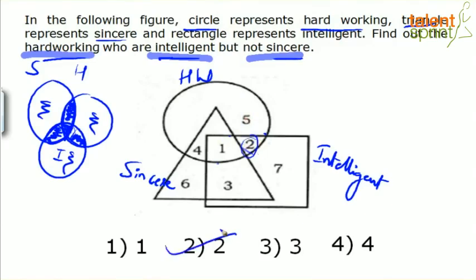So our answer for this question is 2. Region 2 is a part of the circle, a part of the rectangle, but not a part of the triangle. It is common to both circle and rectangle but not common to the triangle. So anything between circle and rectangle but not triangle is 2. The answer is option 2. Very easy — since we have already solved set theory questions, this is even simpler because values are already given in the regions.